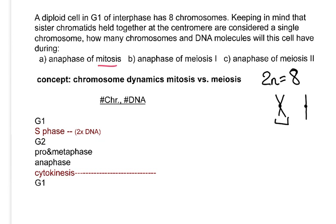Let's do mitosis first, going through the whole thing from the very start. In G1, the cell has eight chromosomes and the same number of DNA molecules because DNA replication hasn't happened yet. As the cell passes through S phase, you see a doubling of the number of DNA molecules, because each chromosome now becomes replicated.